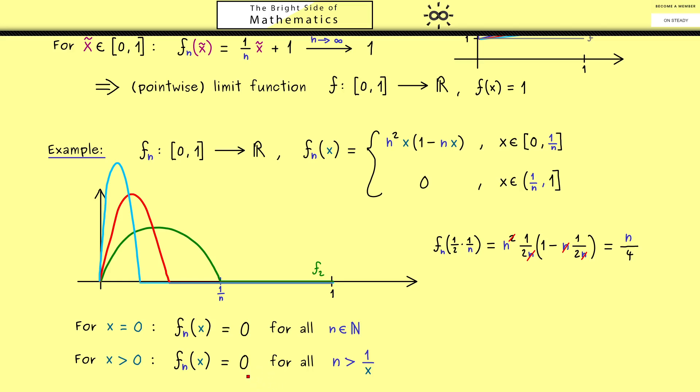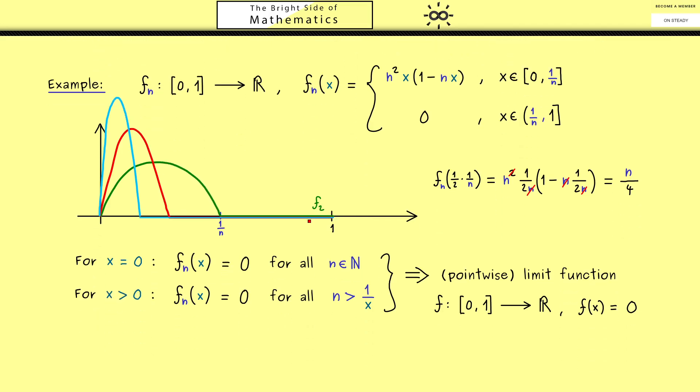We can reformulate the whole thing by saying the sequence of numbers fn(x) is constant eventually. Therefore it is also convergent with limit 0. Hence we have a pointwise limit function given by the 0 function. So you see the result is that we have convergence for the sequence of functions, though the values of the functions get larger and larger. This is a strange result we didn't have for just sequences of numbers. This tells us that the pointwise convergence is maybe not strong enough for our needs.